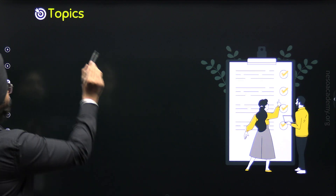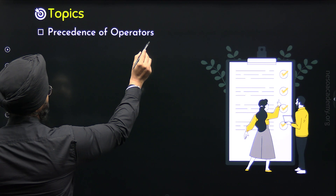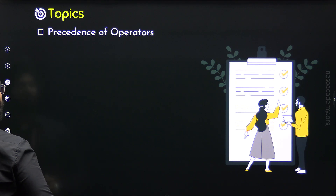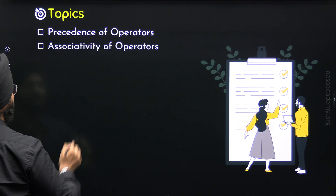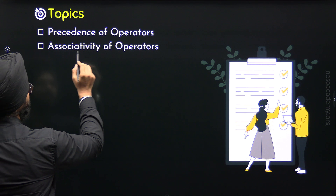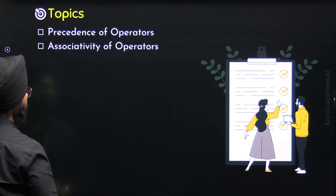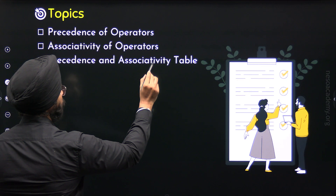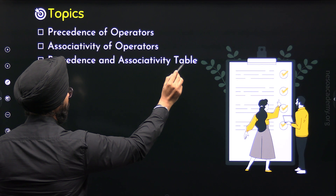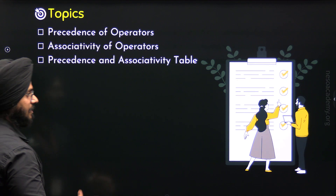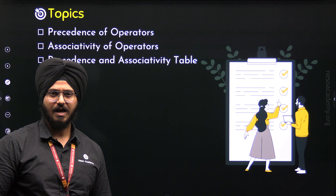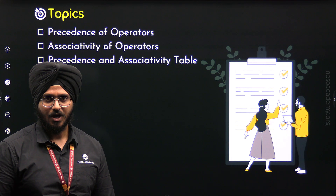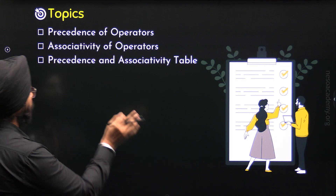The first topic is precedence of operators. First we will understand precedence properly, then we will move to the second topic to understand associativity of operators. After this, we will understand the precedence and associativity table, where we will see different types of operators and their precedence and associativity. So these are all the topics.